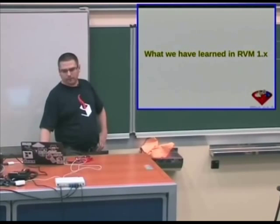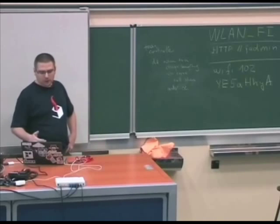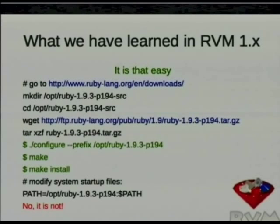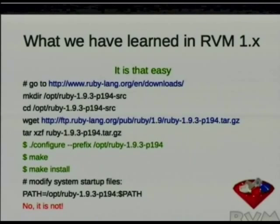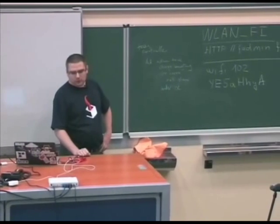What we have learned with RVM one. The basic process of installing Ruby is very simple: configure, make, make install, and it's ready. But no, it's not that simple. You need to first download it, then create a directory to compile it, extract it, and know a lot of additional stuff to make it work properly. And finally, you need to switch your environments manually — change your path every time you change your project.